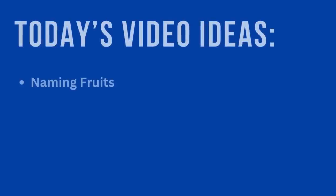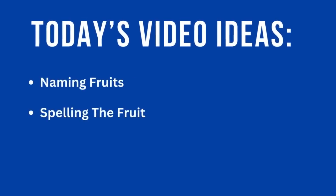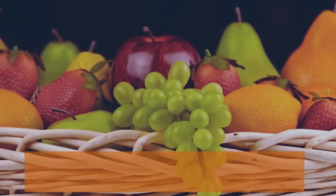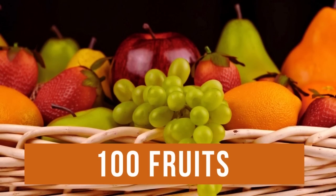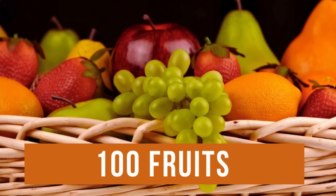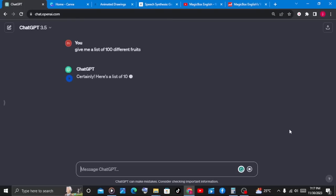In today's tutorial, we will work on naming the fruits and spelling the fruits. What we will simply do is come up with a list of 100 different types of fruits. To do this, we will go to ChatGPT and use this simple prompt: 'Give me a list of 100 different fruits.'